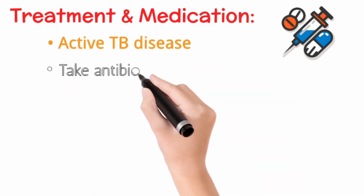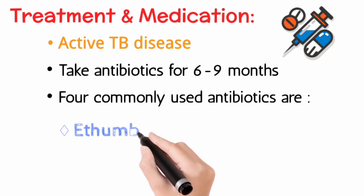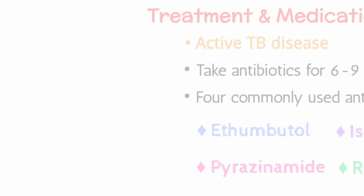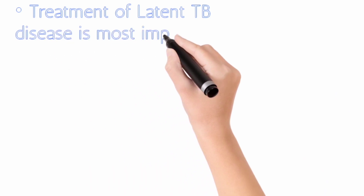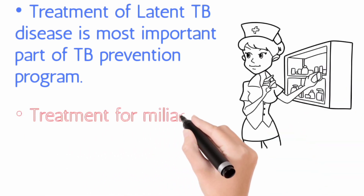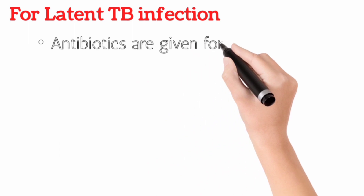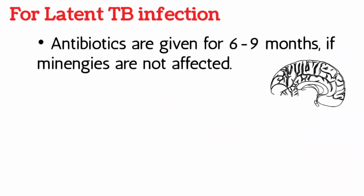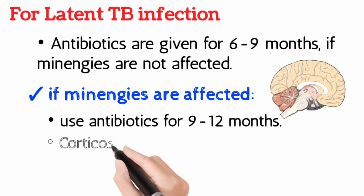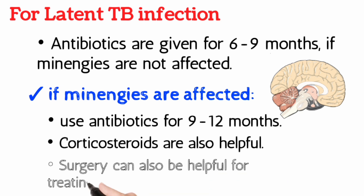If you have the active form of the disease, you'll need to take a number of antibiotics for six to nine months. Four medications are most commonly used to treat it. The treatment of latent TB is considered by many to be an important part of TB prevention. Generally, treatment of miliary tuberculosis is similar to the treatment of pulmonary tuberculosis. Antibiotics are given usually for six to nine months, unless the meninges are affected, in which case they are given for nine to twelve months. Corticosteroids may help if the pericardium or meninges are affected, and surgery is needed for some complications of miliary tuberculosis.